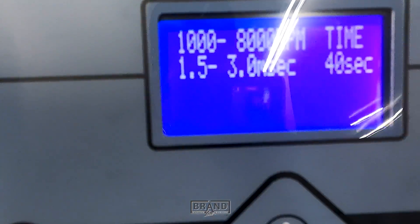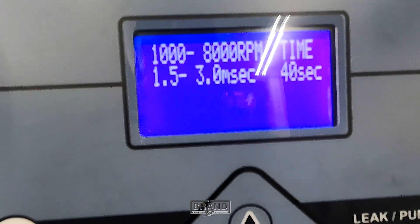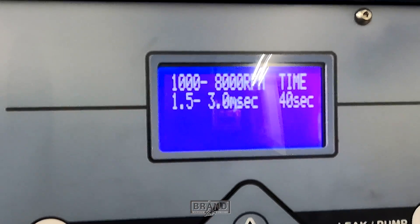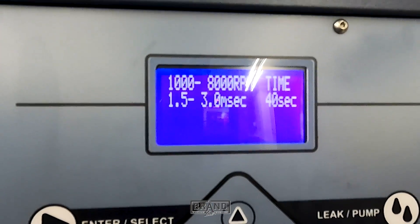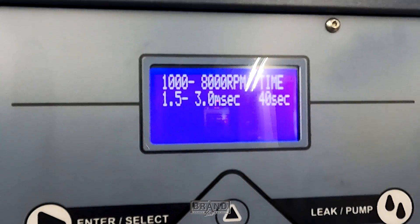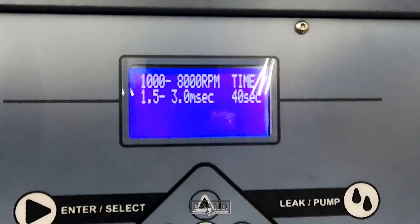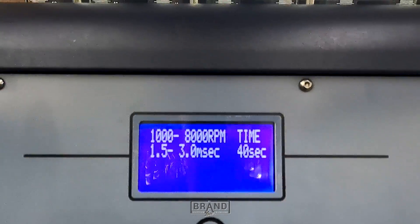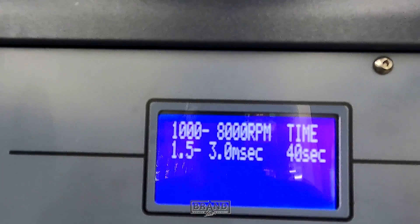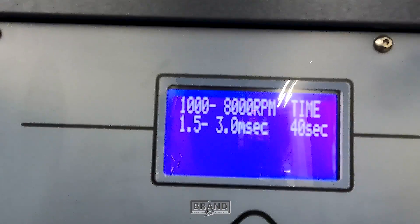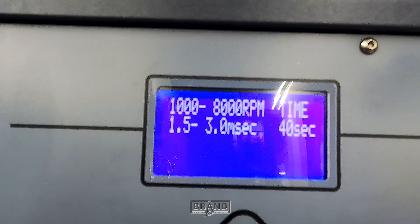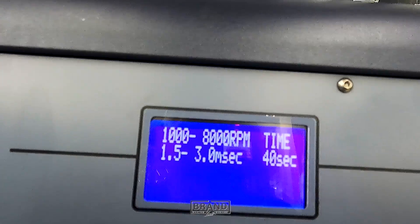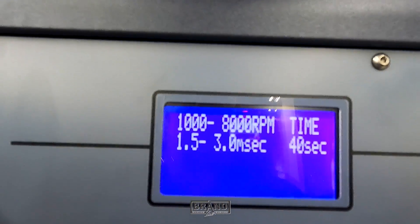I've got a test set up here now. It's going to run 1000 RPM to 8000 RPM, starting at 1.5 milliseconds running to 3 milliseconds and the test is 40 seconds long. It goes through the test up to 8000 and then it will go from 8000 back to 1000. So let's start it here and I'll show you what happens.